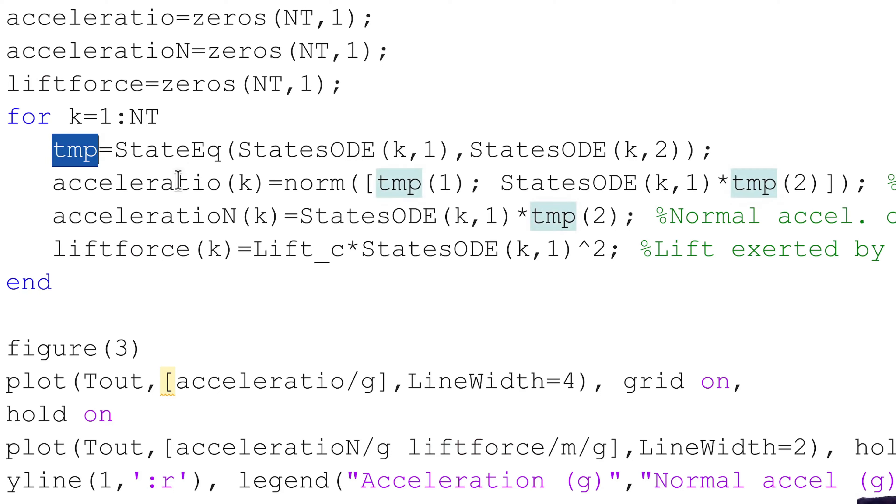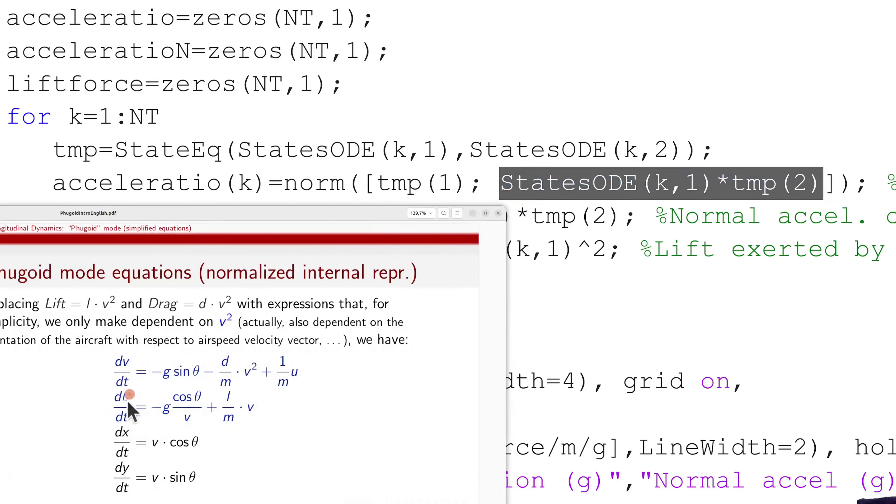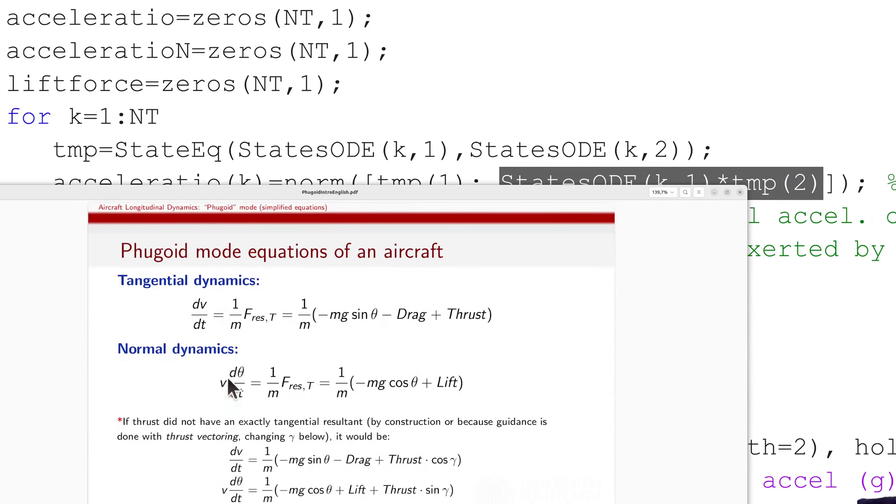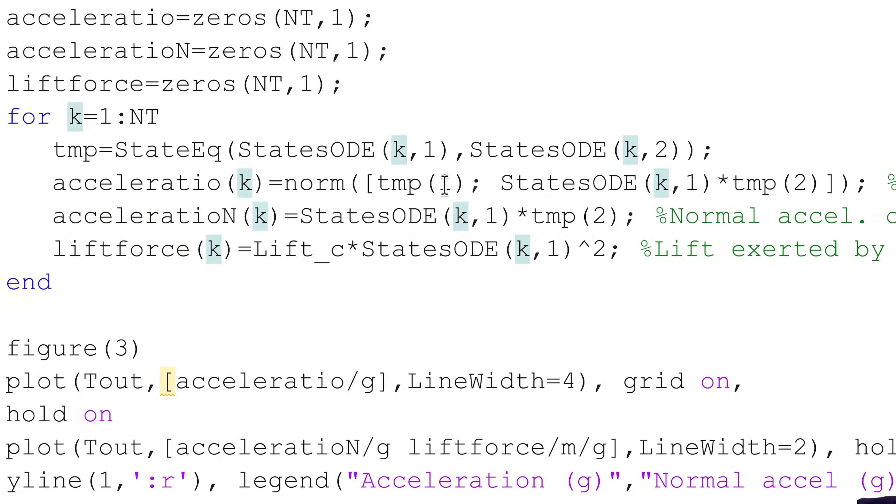So, how do we compute the accelerations? We'll first compute a dummy temporary variable providing me the four state derivatives. And basically, the tangential acceleration is the first component. And the normal acceleration is the product of linear speed, the first simulated state, times the angular velocity, which is the output of the second state equation. It is this product that is equal to the normal acceleration.